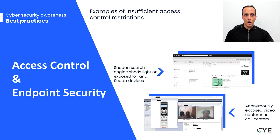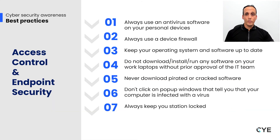Many of the modern attacks are possible due to insufficient access control. For example, in the Shodan Internet of Things search engine, you can find multiple accessible call centers, some even without authentication. Hackers can interrupt online meetings as they take place, in some cases without the participants even being aware, like in the example below on the right. So you need to take care of access control as well as your endpoint security.